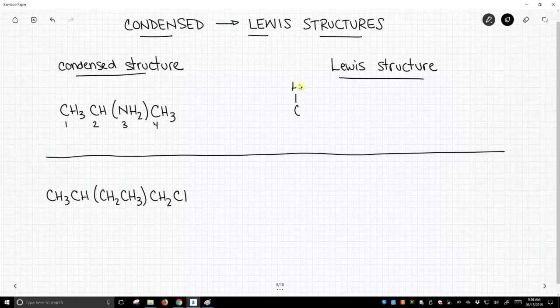So we start with carbon 1. That is a CH3. Carbon 1 is attached to a CH. That will be carbon 2.